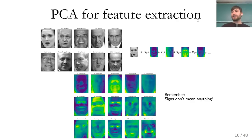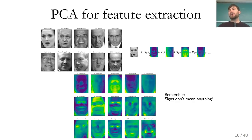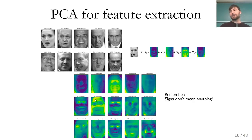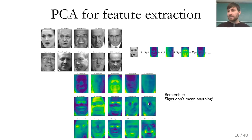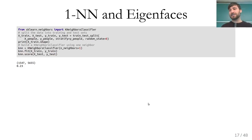If you do feature extraction, it's an empirical fact that whitening helps — scaling all feature values after applying PCA, so each of these template components has the same weight. Here this dataset is actually in scikit-learn — it's Labeled Faces in the Wild, people who were in news articles in the 90s. Using a nearest neighbor classifier directly on the pixels gives accuracy of 0.23. Using PCA with 100 components and then a nearest neighbor classifier gives accuracy of 0.31, going from 5,655-dimensional images down to just 100 dimensions.